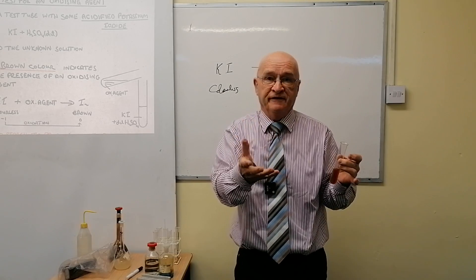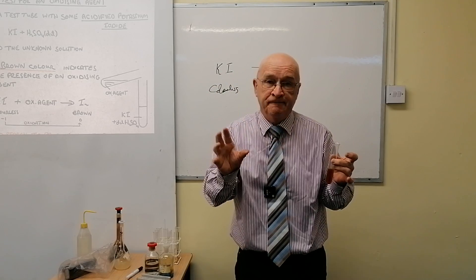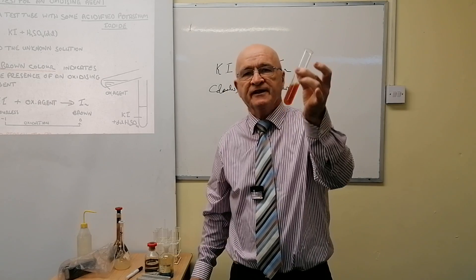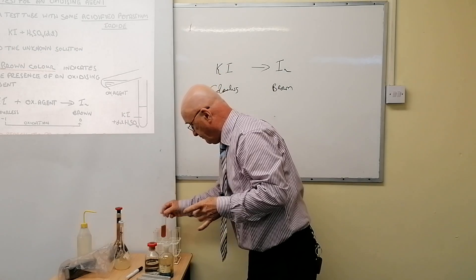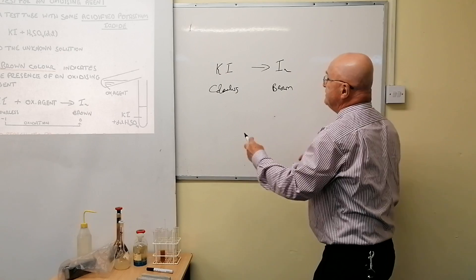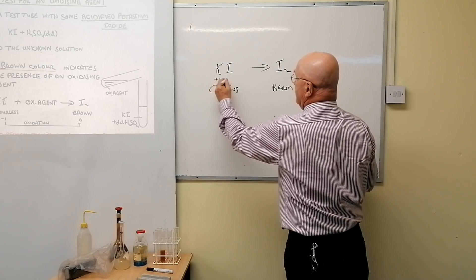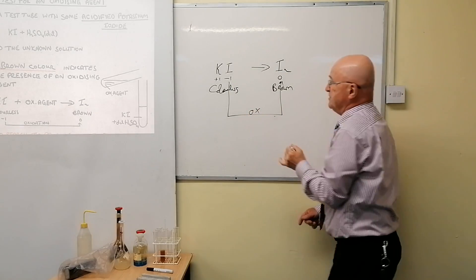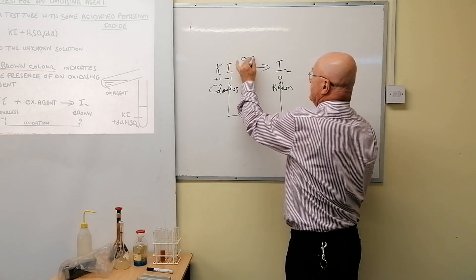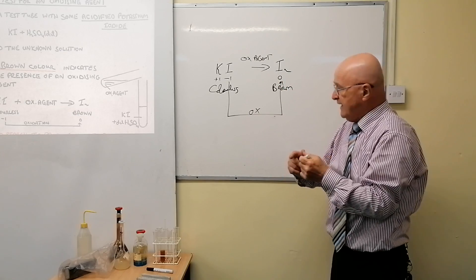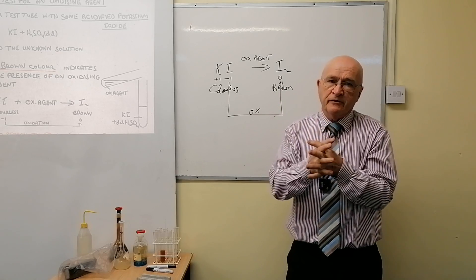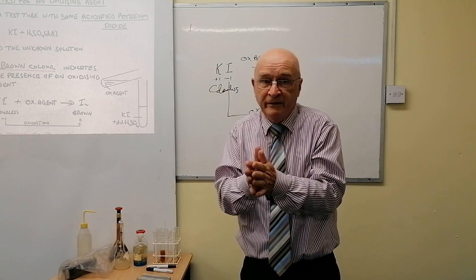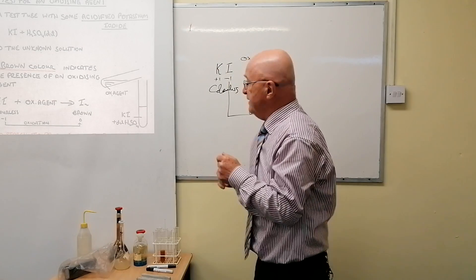You need to know the recipe: if you want to test for an oxidizing agent, use acidified potassium iodide — it's a colorless mixture. If it turns brown, it's an oxidizing agent; if it doesn't, it isn't. You can also add a little starch to confirm — it goes blue-black — but that's another part of your course. The oxidation numbers show I⁻ goes from minus one to zero — an increase, so that's oxidation — which requires an oxidizing agent. You literally need to know the testing reagent and what you'll see.